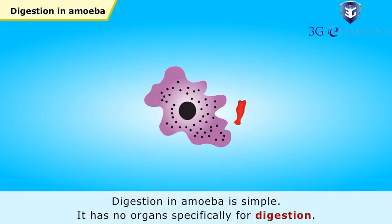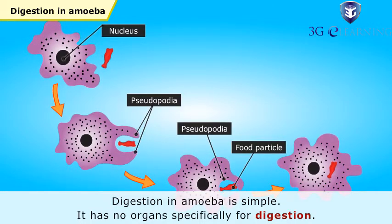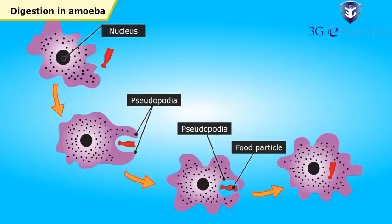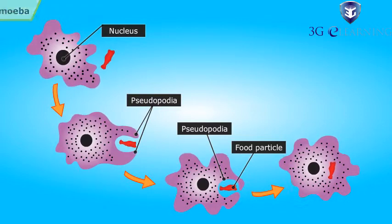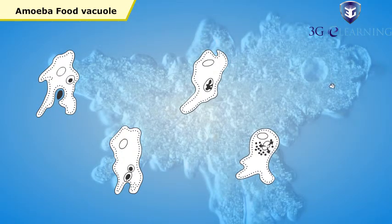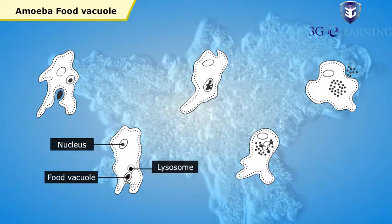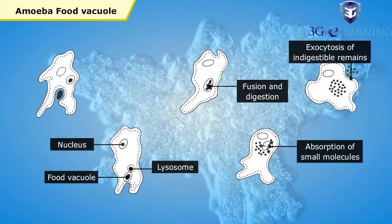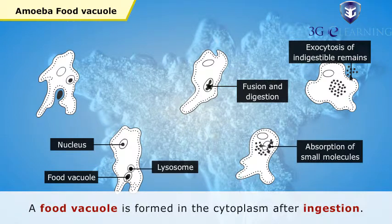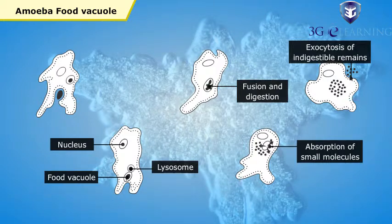Digestion in amoeba is simple. Pseudopodia are finger-like projections that cover the prey from all sides and ingest it. Ingestion takes place by surrounding the food with pseudopodia and taking the food in. Then, a food vacuole is created inside amoeba's body. It digests food through digestive juices that are secreted. Nutrition is released into the cytoplasm. A separate vacuole eliminates the undigested food through a break in the cell wall.